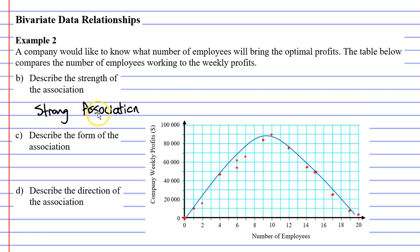Just remember that a strong association is the same as saying a strong relationship. Now moving on to question C. Describe the form of the association. Is it linear or non-linear? It's obviously non-linear because it's not a straight line.